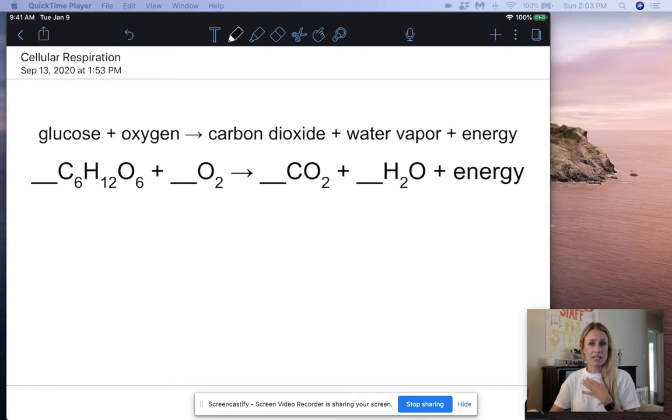So in our bodies when we eat food, eventually that food is converted into glucose and we can use that glucose to then make energy in the form of ATP.